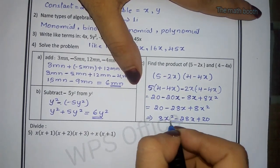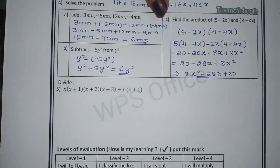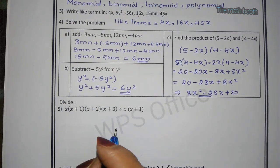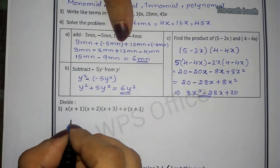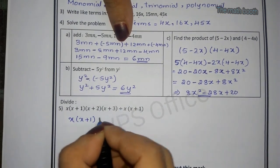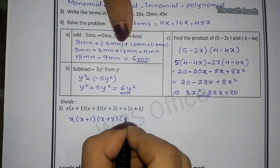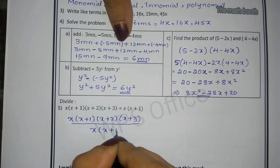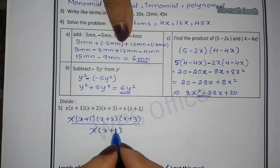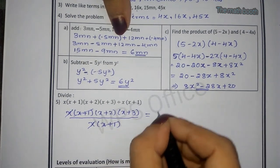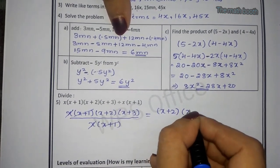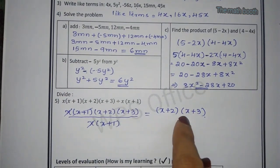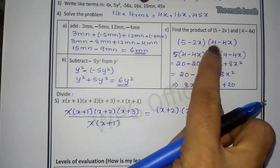Let us see what the next question is. Divide, this is the last question of self-evaluation sheet. Divide x times x plus 1 times x plus 2 times x plus 3, upon x times x plus 1. So x, x get cancelled, x plus 1, x plus 1 get cancelled. What is left here? X plus 2 times x plus 3. This is left, this two bracket is left. We can keep this as answer also, if we want we can solve in this form also.